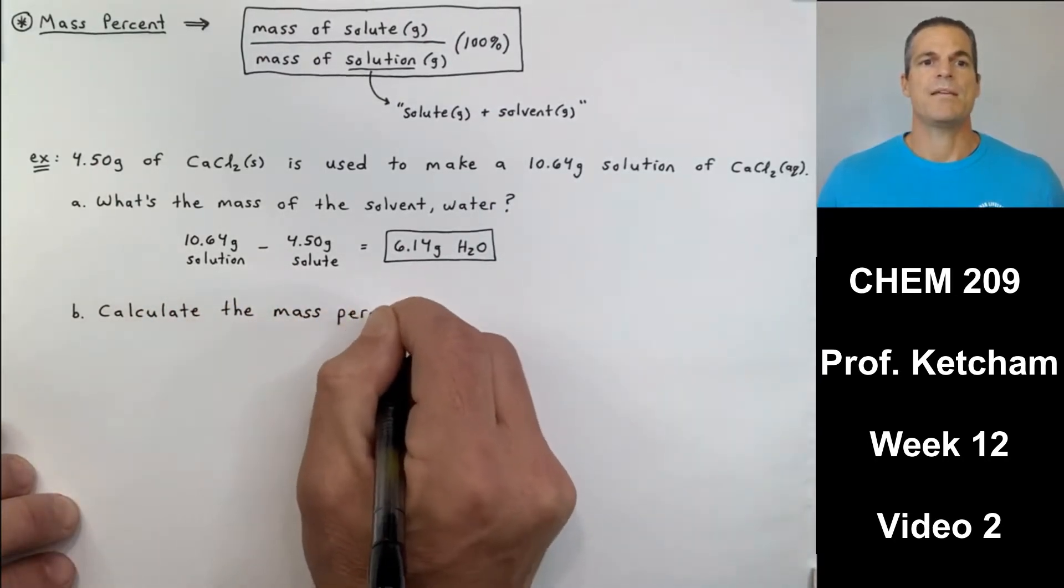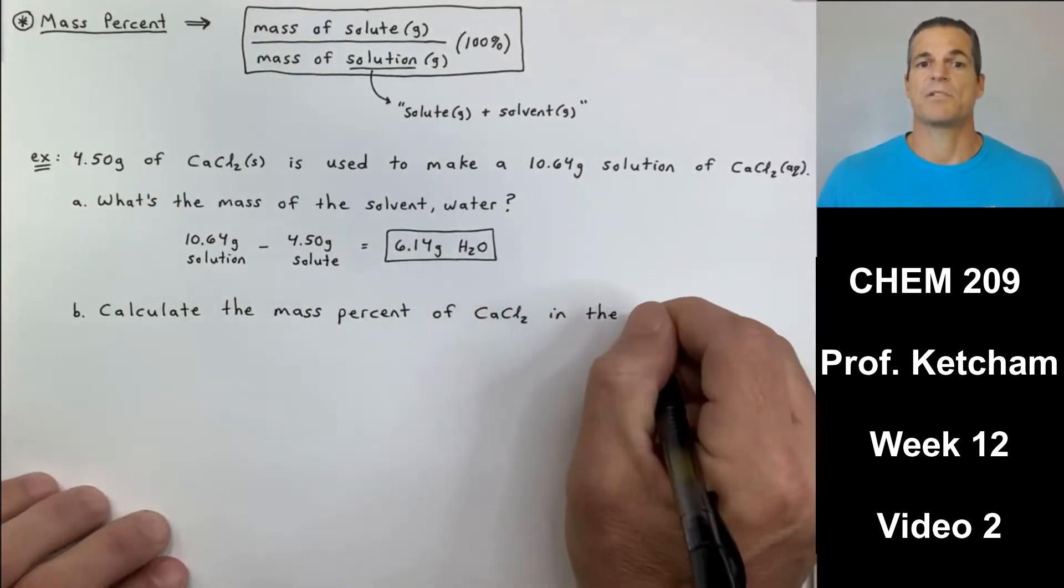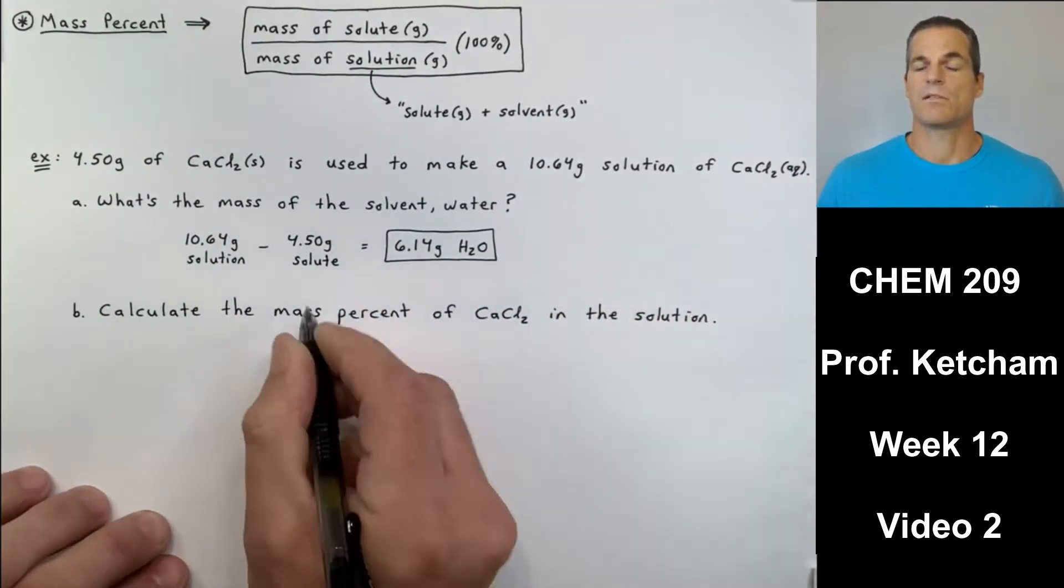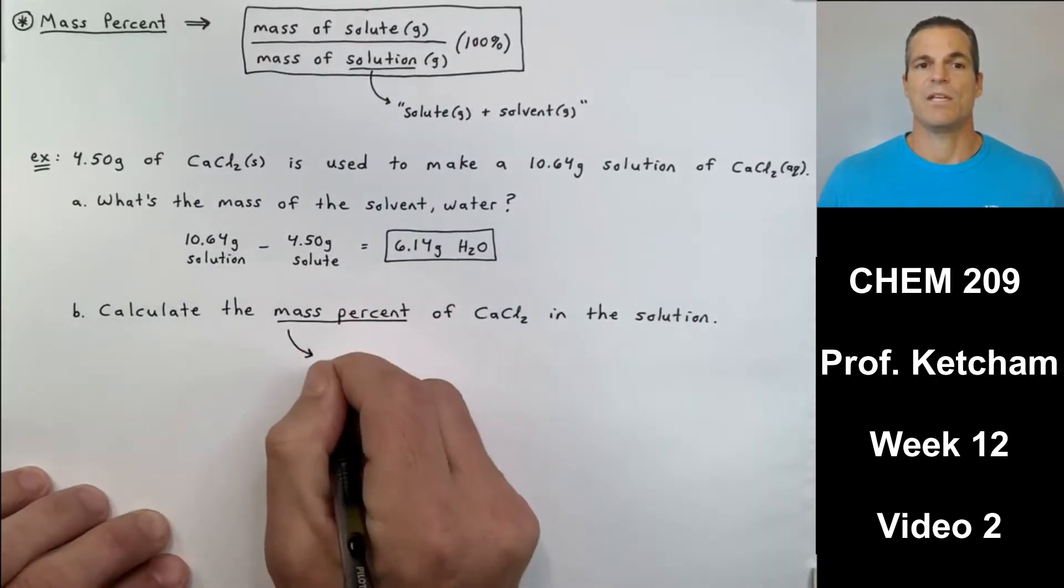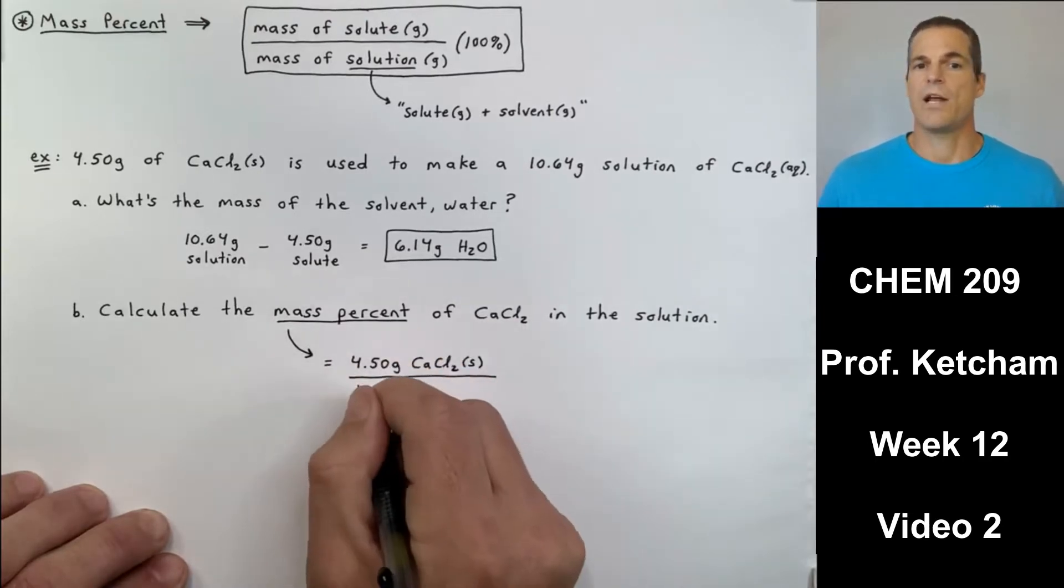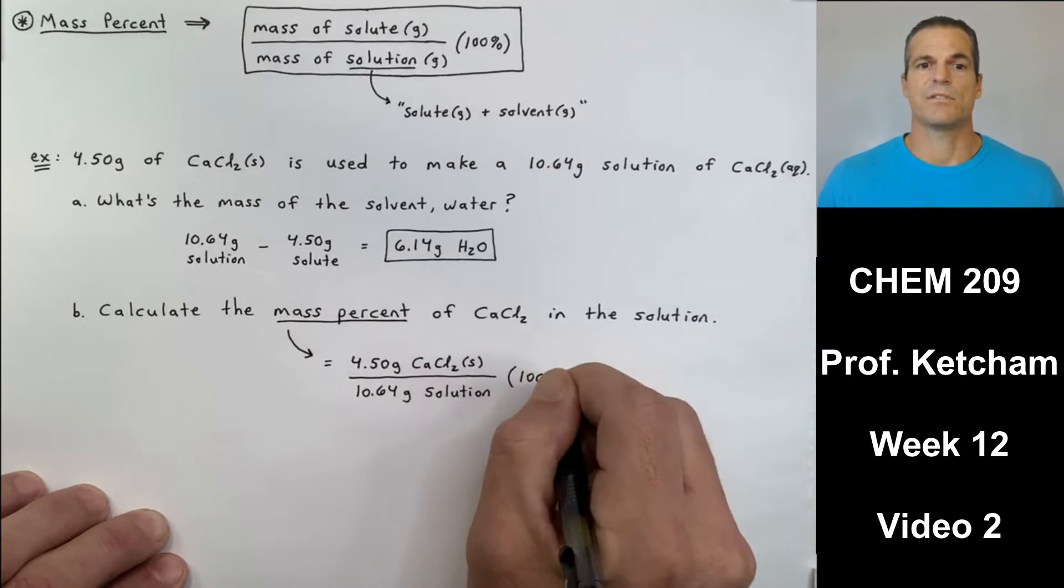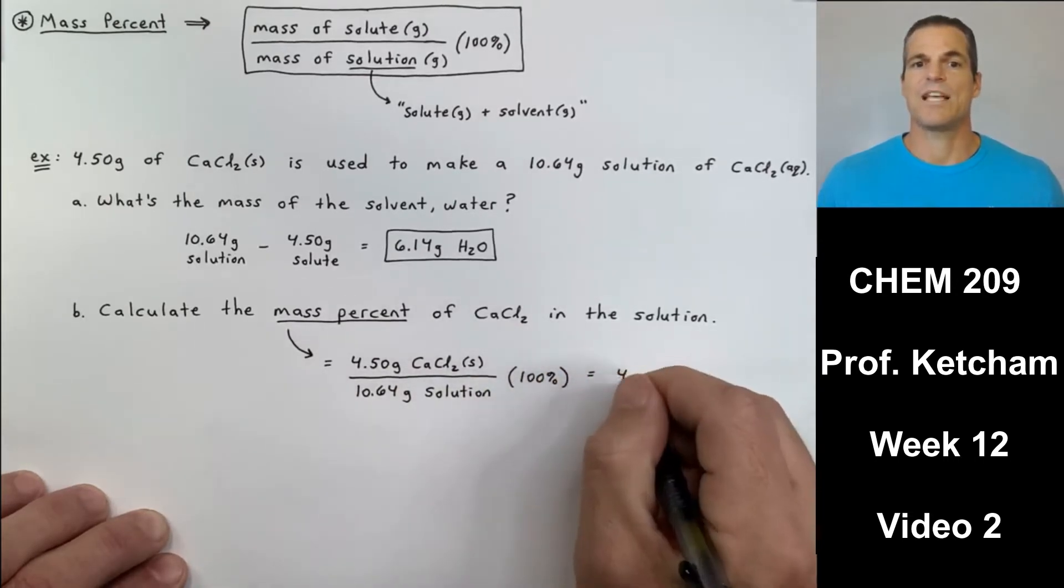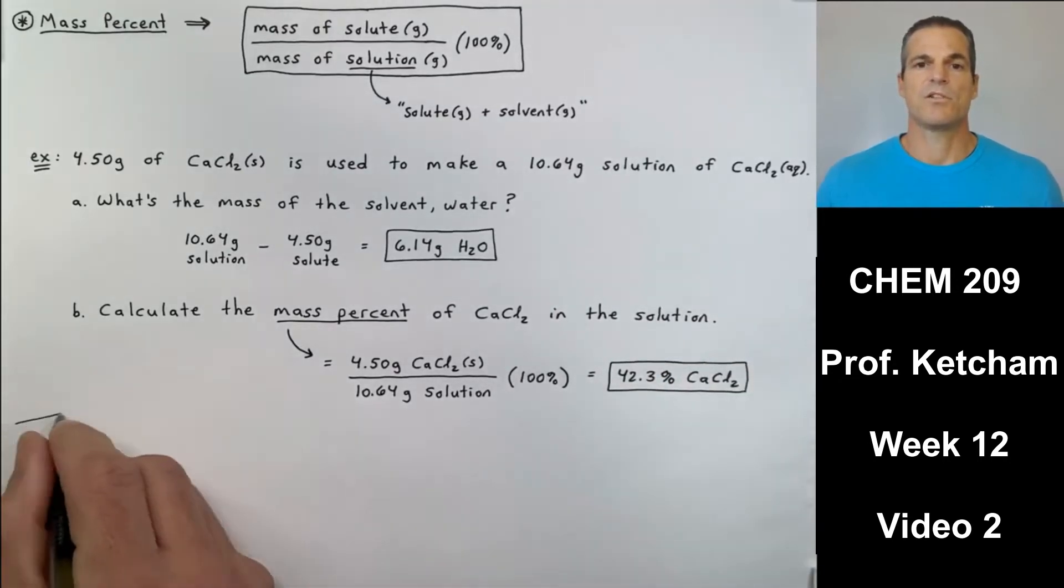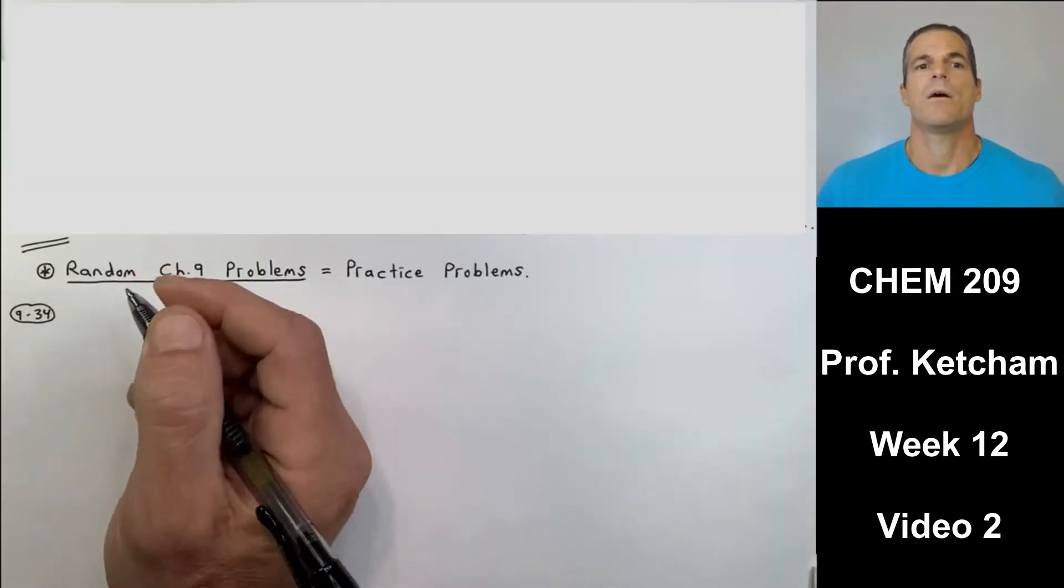Now B is actually totally separate from A, even though it might not look like it. It says, calculate the mass percent of calcium chloride in the solution. And they've given us everything we need in the introduction to the problem before A. 4.50 grams of solute divided by the entire solution's mass, 10.64, times 100 percent. And we are left with 42.3 percent calcium chloride. So the solution is 10.64 grams, and the calcium chloride is 42.3 percent of that mass.